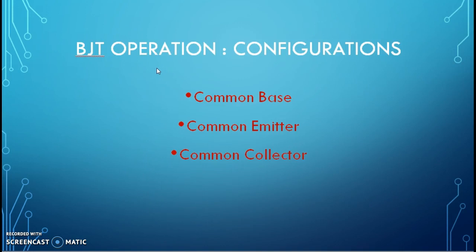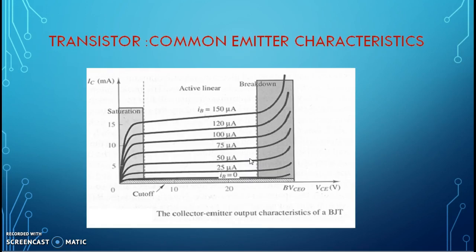When we are operating the BJT, there are three different configurations: common base, common emitter, and common collector configurations. These three configurations have their own characteristics, but common emitter characteristics are mostly used in applications as amplifier as well as the switch.